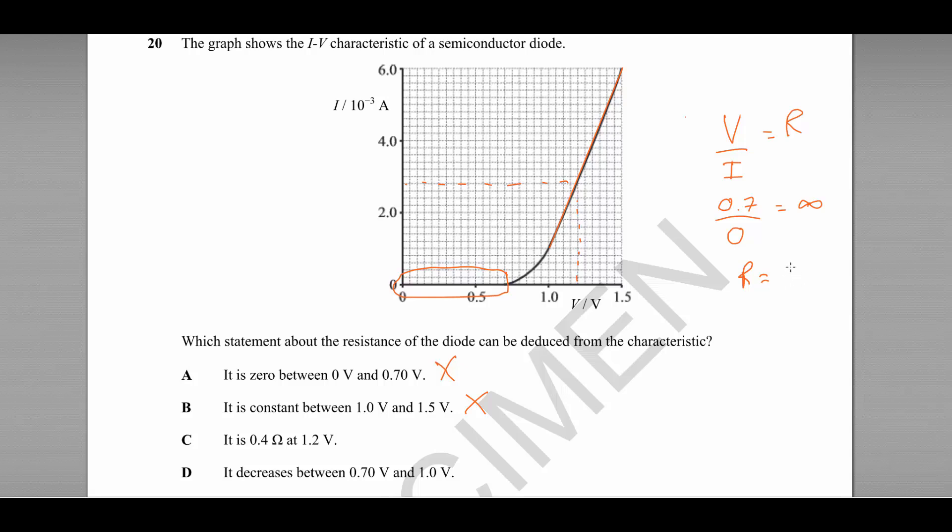So that would be R is equal to 1.2 divided by 2.8 times 10 to the minus 3, which is actually 428 or 429 ohms. So that is certainly not true.